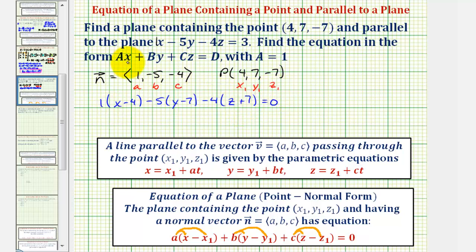Now we'll distribute and write this in standard form. So we'd have x - 4, -5y + 35, -4z - 28, equals zero.